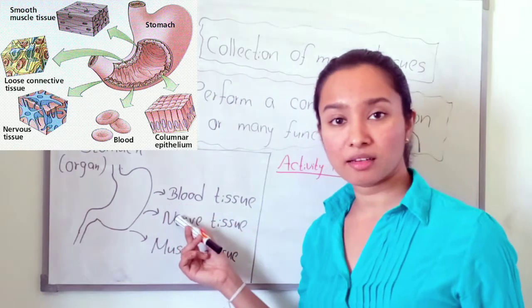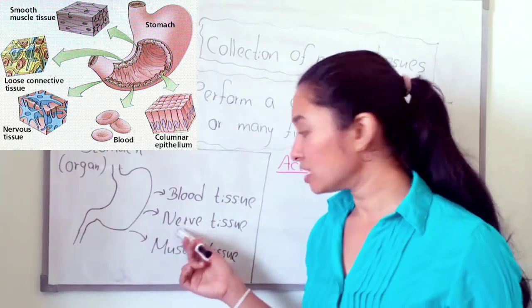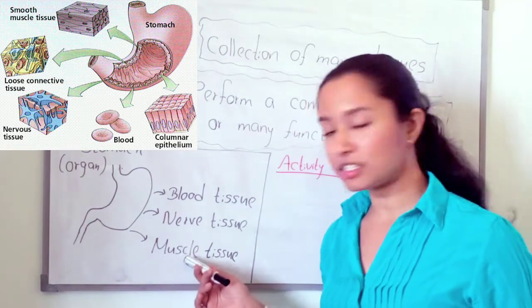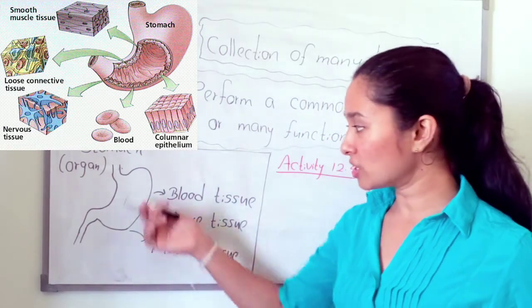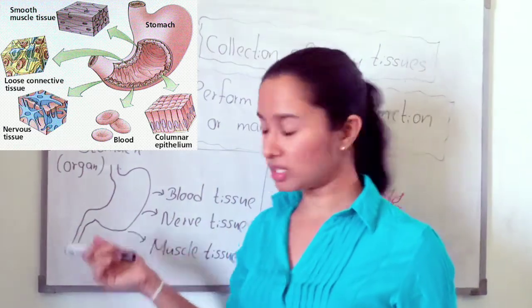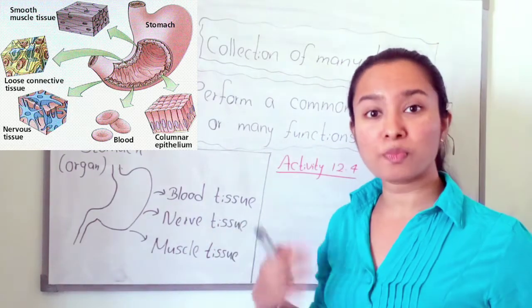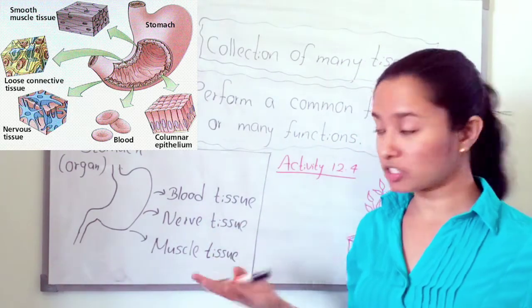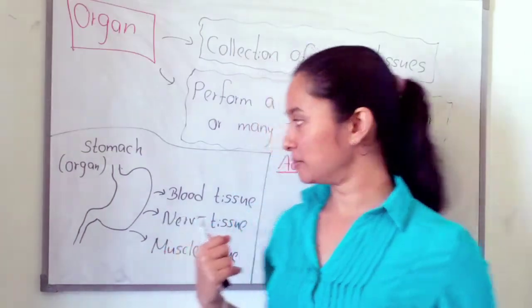Blood tissue means 'rudira particle', nerve tissue means 'snive particle', and muscle tissue means 'facial particle'. There are so many tissues. These tissues work together to perform many functions in our stomach.